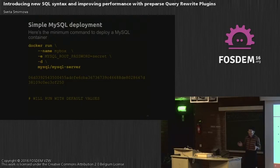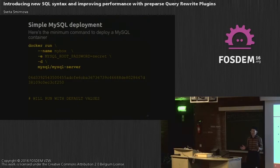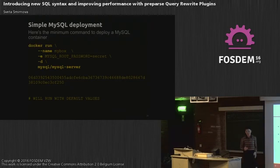Now let's move to writing plugins, but first a little bit of history. The first plugins were introduced in version 5.7.5. There were only two types of plugins: pre-parse and post-parse.